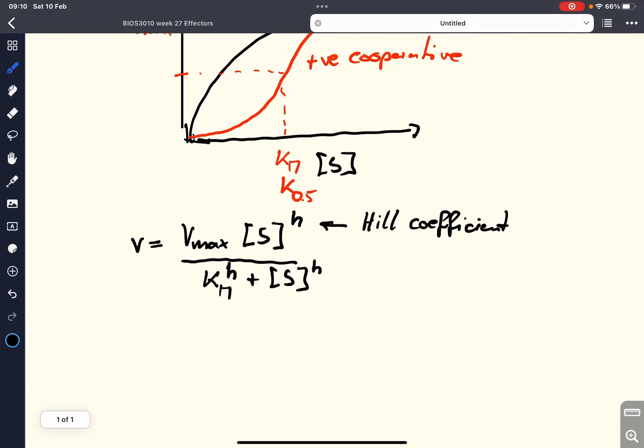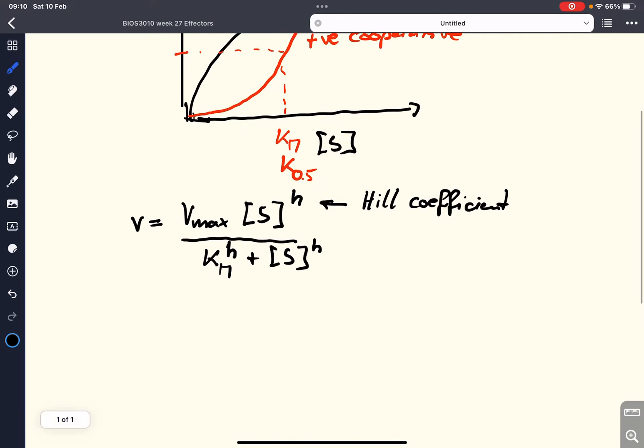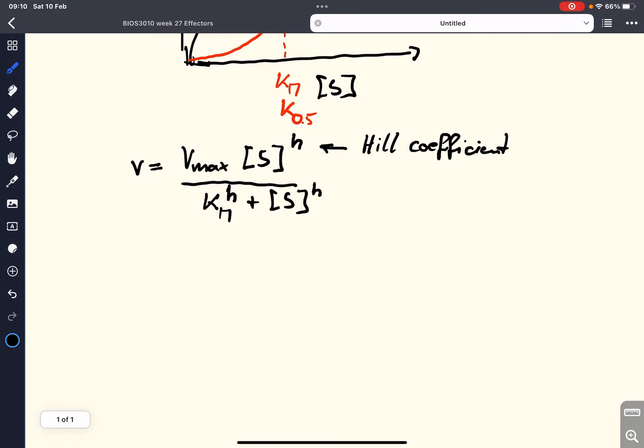And this was developed by Edward Hill in the 1950s-60s, this equation. So how do we find this H? For that, we need to do a little bit of our algebra because we can determine H, the Hill coefficient, experimentally.